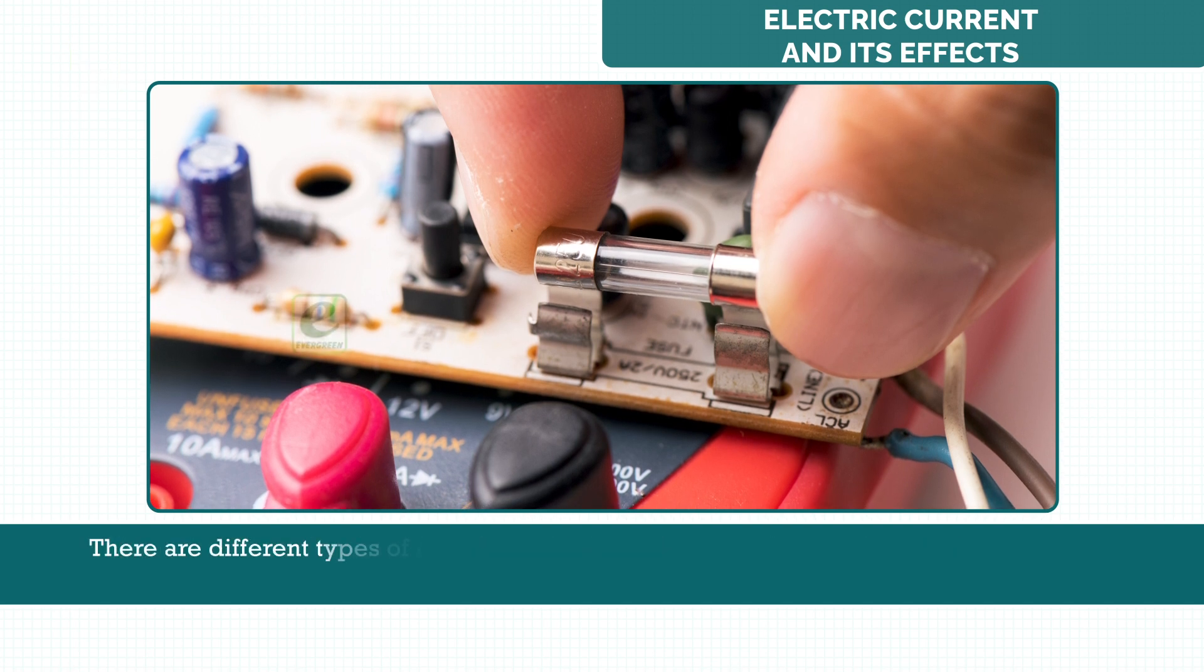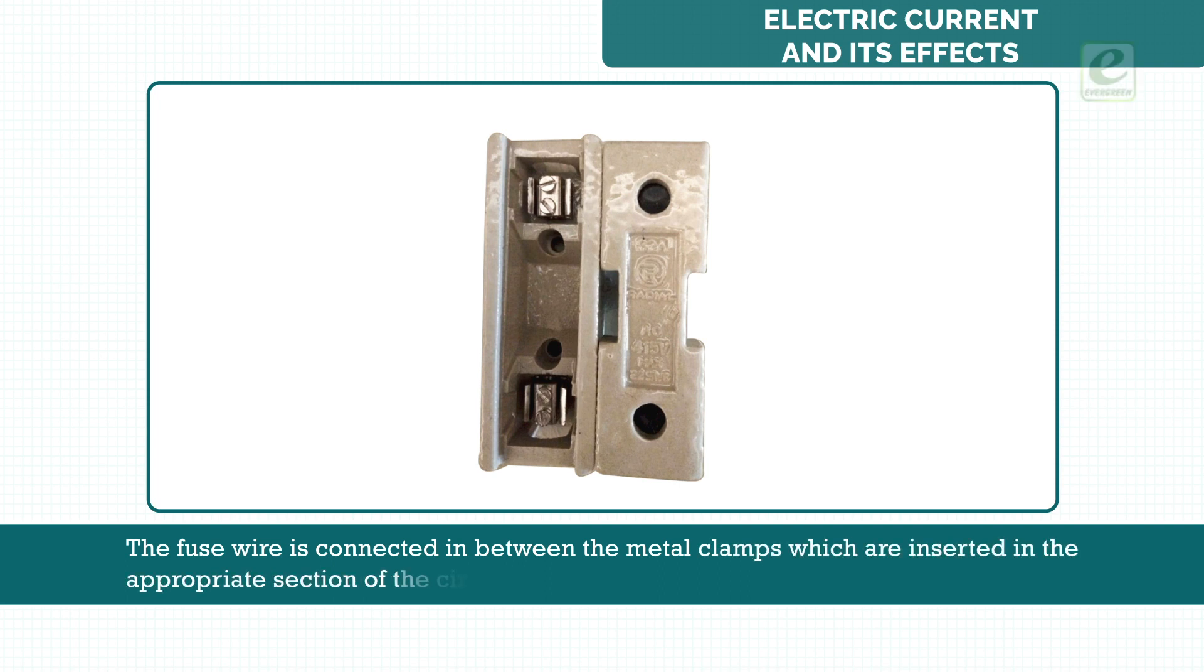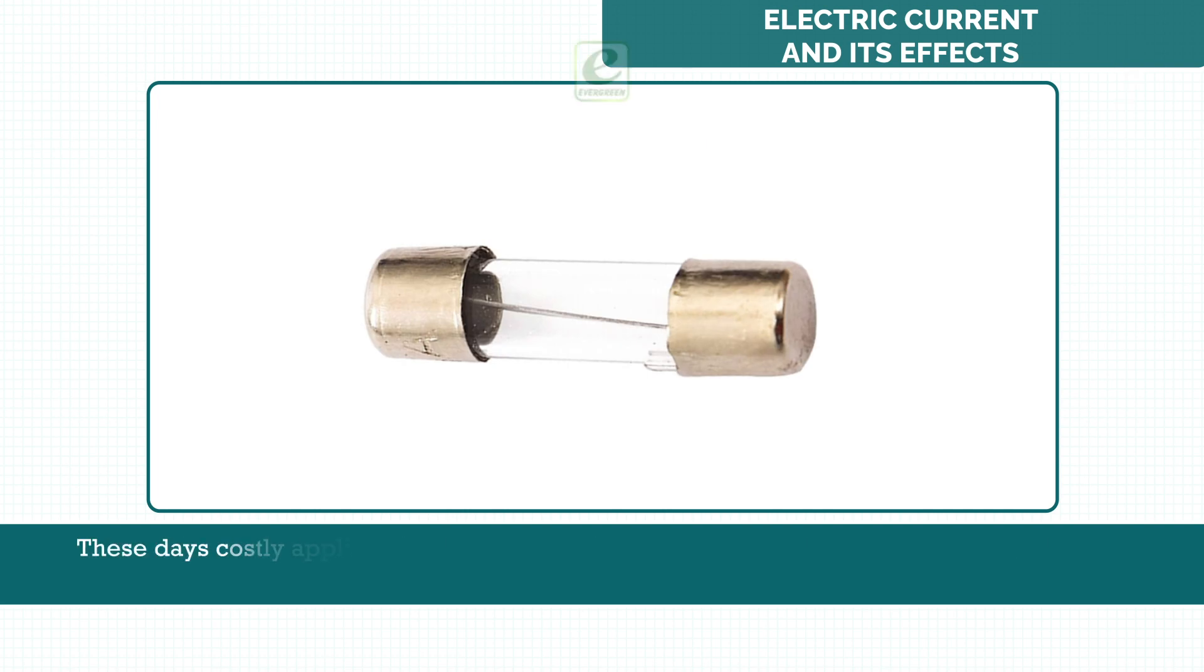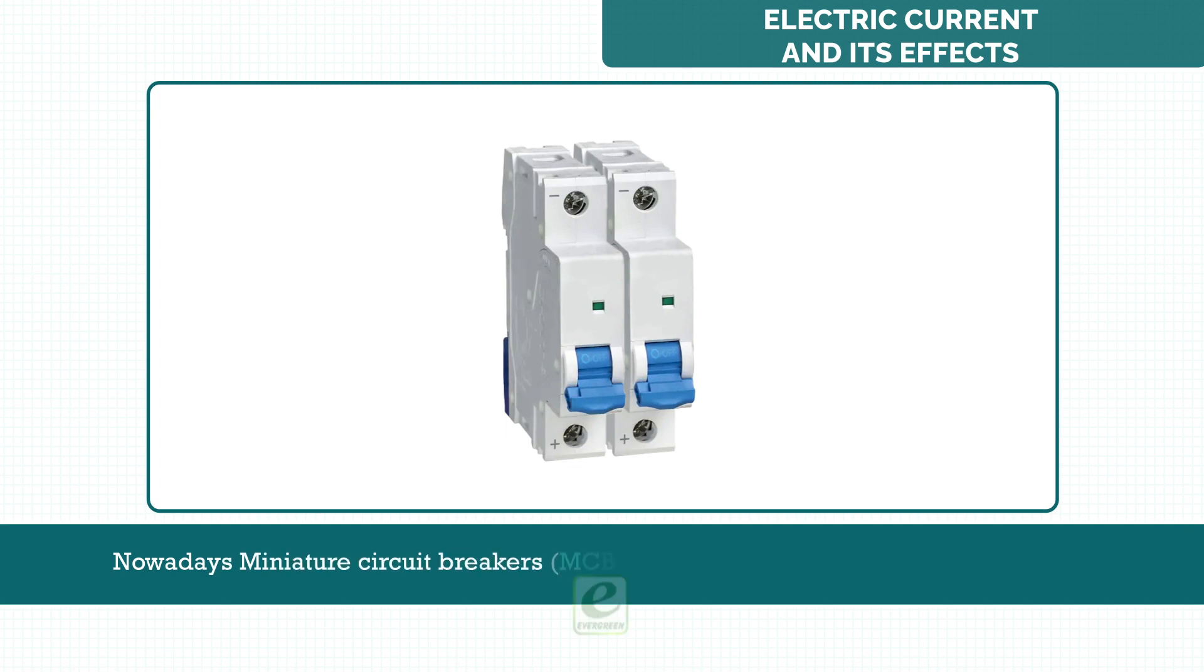There are different types of fuses. The older one is made of two metal clamps fixed on a porcelain base with a groove in between. The fuse wire is connected in between the metal clamps which are inserted in the appropriate section of the circuit. These days, costly appliances are fitted with a cartridge type fuse. It consists of a length of fuse wire connected to metal caps at the end of a short glass tube. Nowadays, miniature circuit breakers or MCBs are being utilized for lighting circuits.